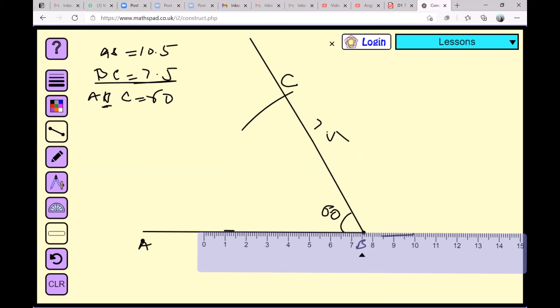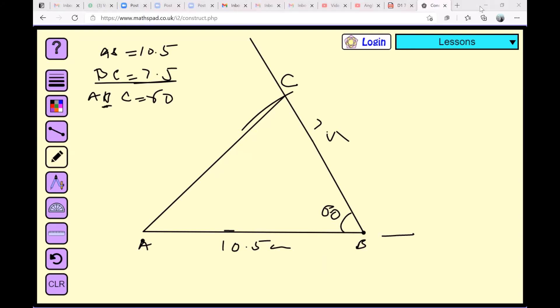And I will join this point to point A, and this has given me the triangle ABC with angle ABC 60 degrees, with length AB is 10.5, and BC length is 7.5. And AC length can be measured easily.